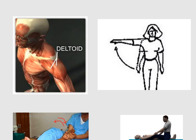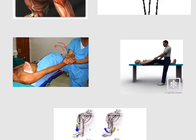After that, we have to try to reduce the joint. There are many maneuvers to reduce the joint. The first one is the Hippocrates maneuver. In the Hippocrates maneuver, the doctor places his heel in the axilla of the patient, slightly abducts the arm, and then tracts the arm to reduce the dislocation.